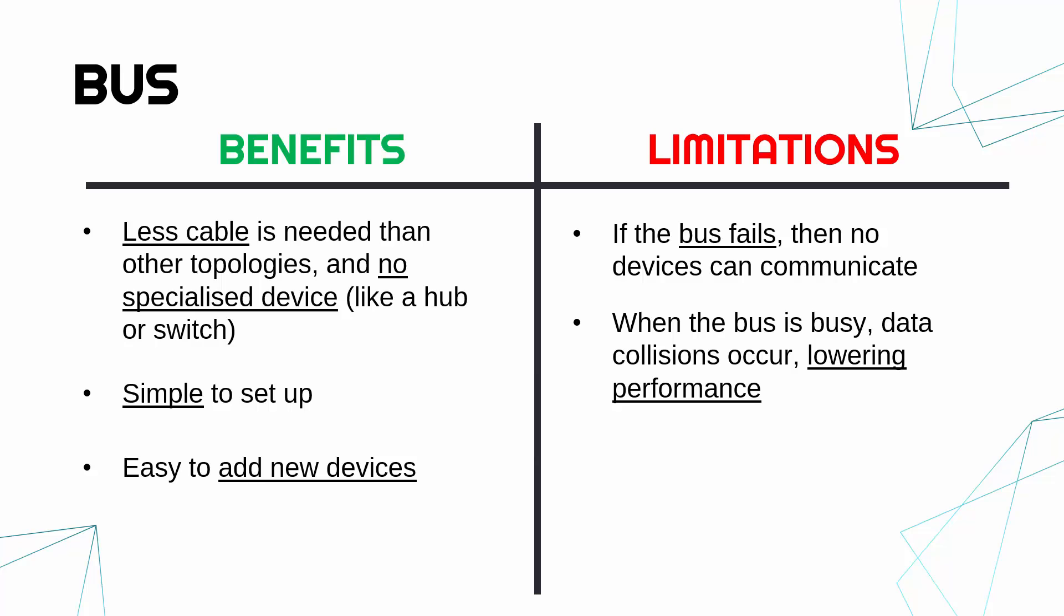When the bus gets busy, there will be more and more collisions, which means the performance goes down. If you've got data colliding and getting errors, you've got to resend it, which slows down the whole network.